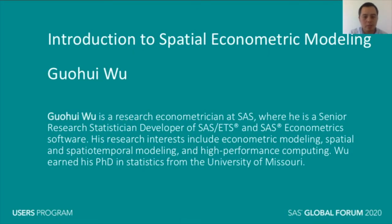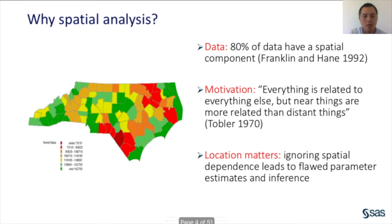I would like to start this tutorial with two questions. My first question is: why spatial data analysis? We need to consider spatial data analysis because spatial data is abundant in many applications. For spatial data, we can associate observations with different points or regions in space. When data are collected from different points or regions in space, nearby observations tend to be correlated, as described by the first law of geography, which says everything is related to everything else, but near things are more related than distant things. From the modeling point of view, the first law of geography suggests the need to account for spatial dependence when analyzing spatial data.